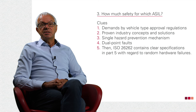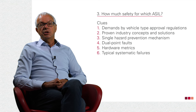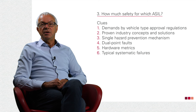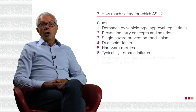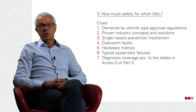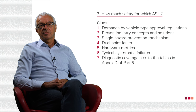ISO 26262 contains clear specifications in part 5 with regard to random hardware failures, though it is not entirely clear regarding systematic failures. Message communication will always be protected against typical failure modes. Safety-related data must be protected against unauthorized access and bit errors. Sufficient performance of the microcontrollers must help ensure that information about the vehicle status is available in a timely manner. Often, a rule of thumb can be useful: look at the tables in annex D of hardware part 5 of ISO 26262. For ASIL C and D safety goals, choose measures with high — 99% — diagnostic coverage with respect to directly hazardous faults. For ASIL B, measures with medium 90% diagnostic coverage are sufficient.